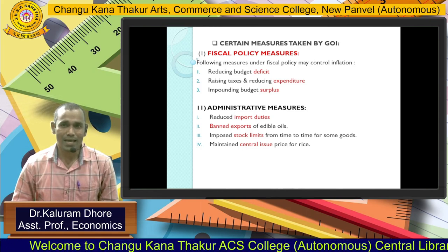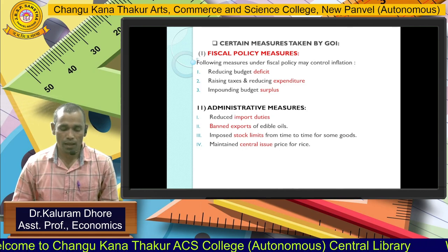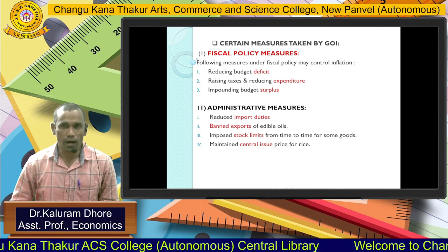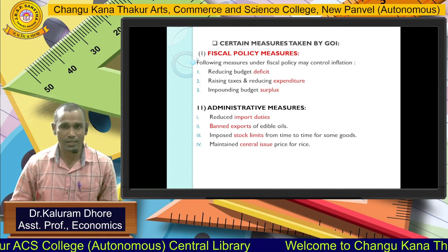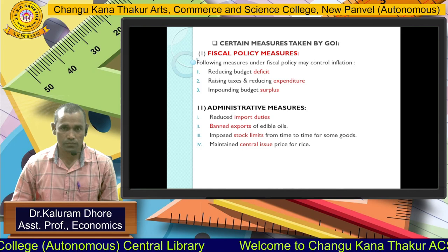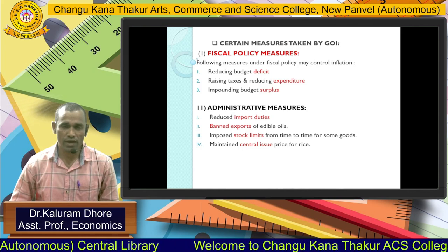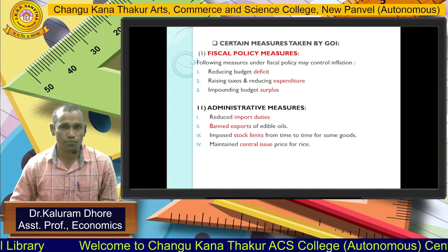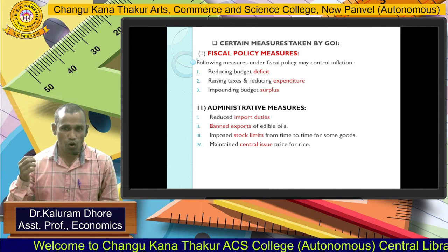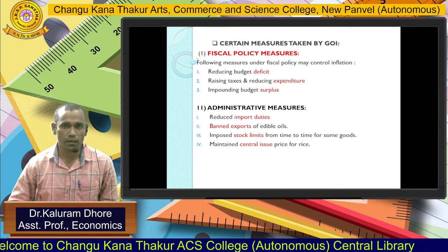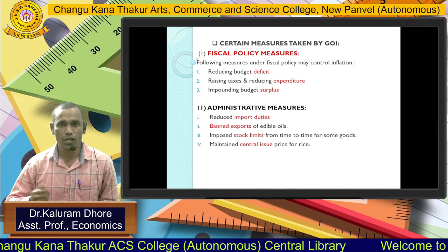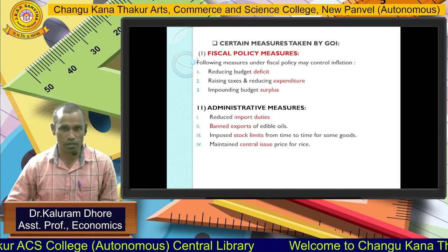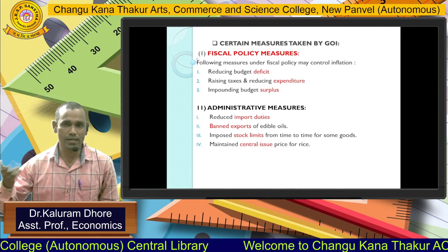Second point: ban on export of edible oils. When we require more consumption of such items in our country but are exporting them to other countries, it creates an artificial shortage domestically. Due to this scarcity of supply of oil, demand increases while supply is less, and automatically the price goes up — which feeds inflation.